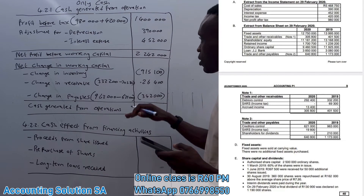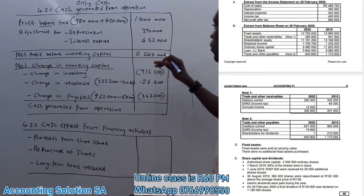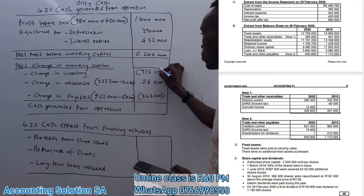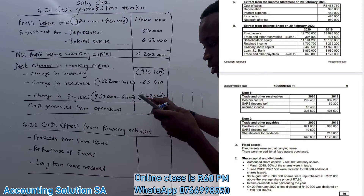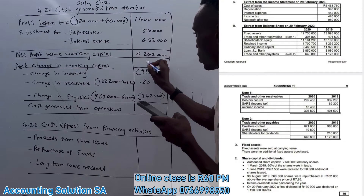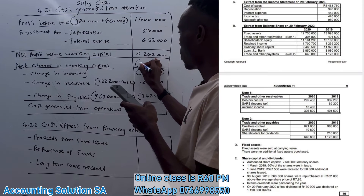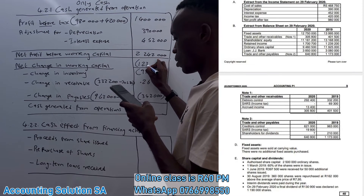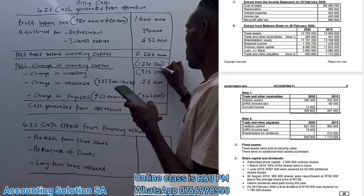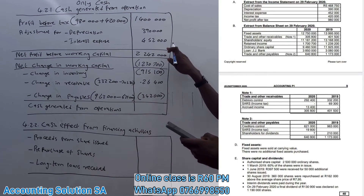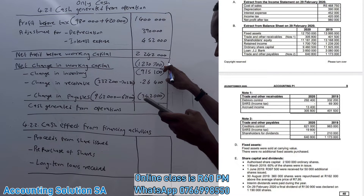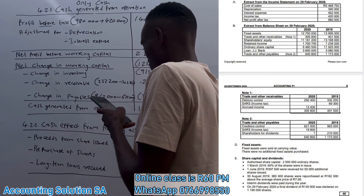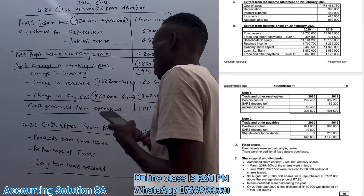After calculating all three working capital changes, the total net change in working capital comes to negative 1,280,700.